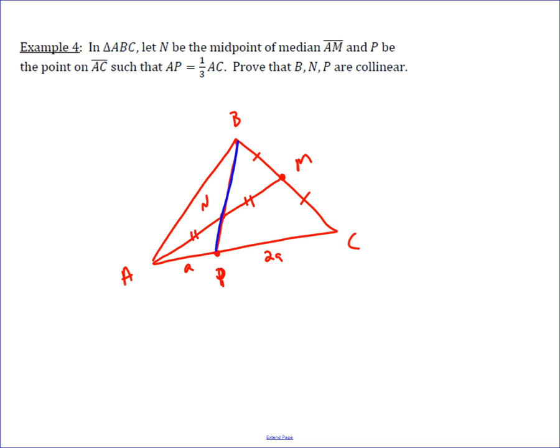In Menelaus's theorem, we need a single triangle where the three points lie on its sides. We can't use triangle ABC. Instead, we use triangle AMC. In triangle AMC, P is on AC, B is on MC extended, and N is on AM.